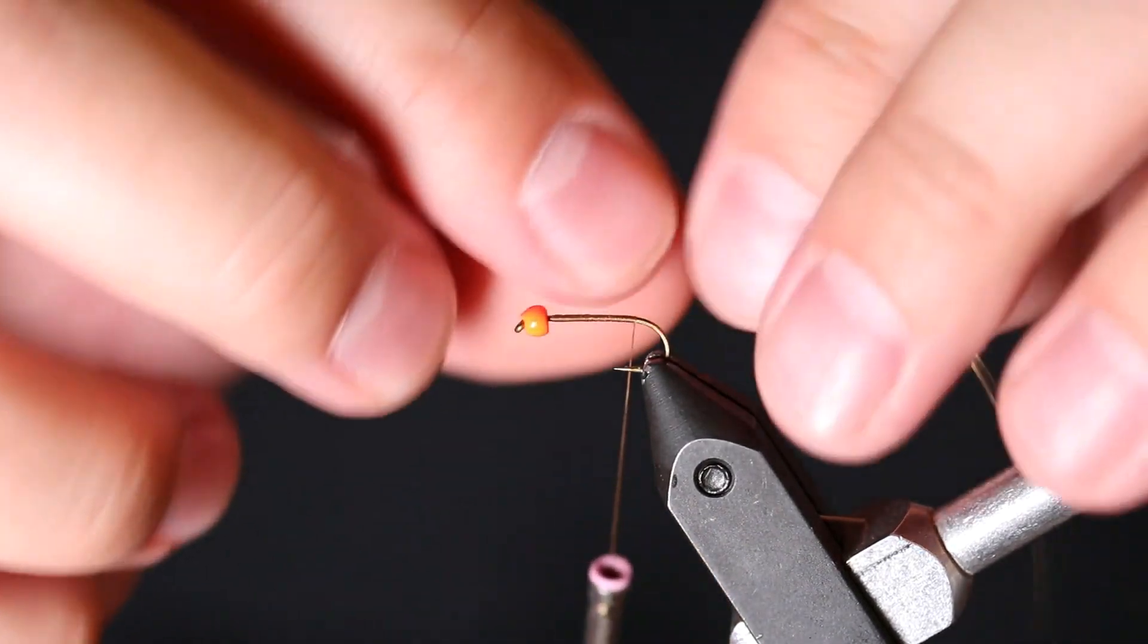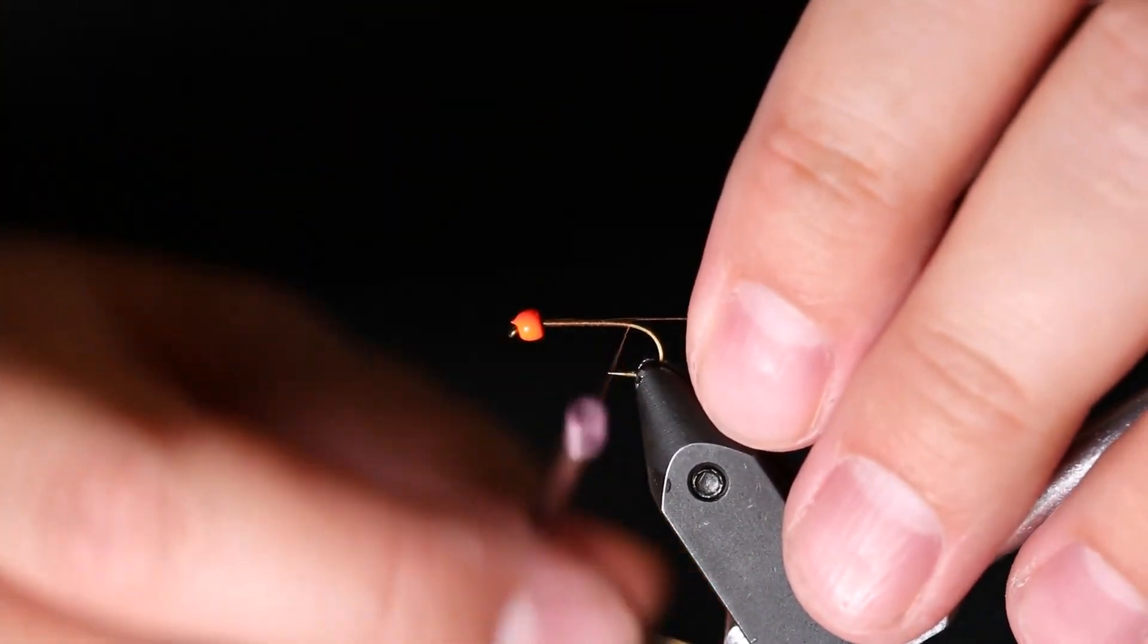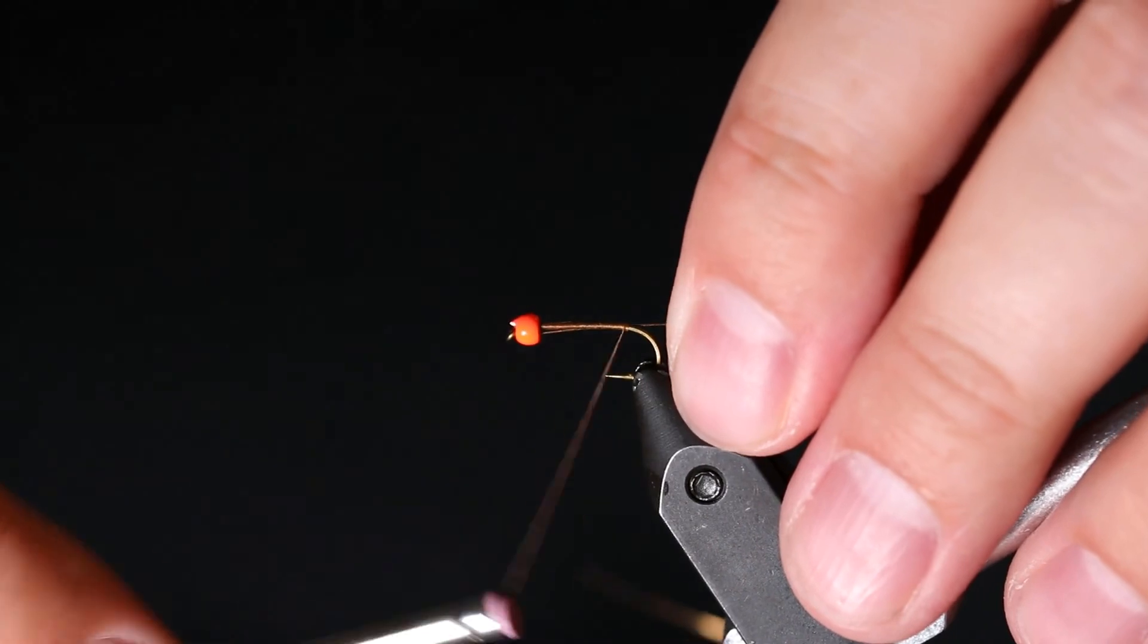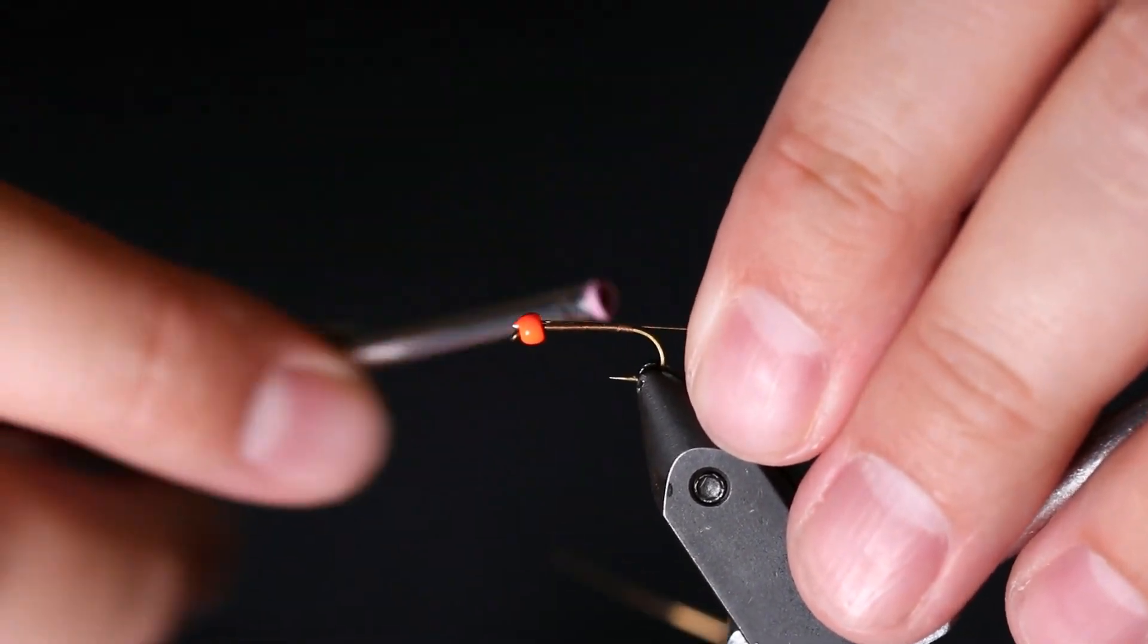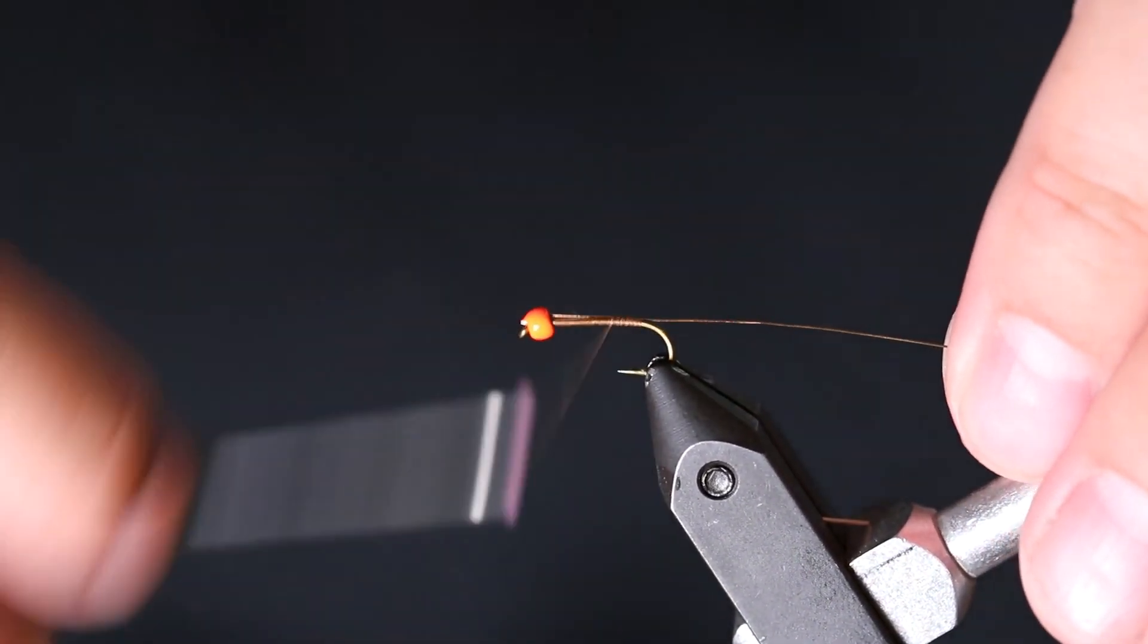Let's go ahead and take our gold ultra wire and tie that in along the side of the hook.